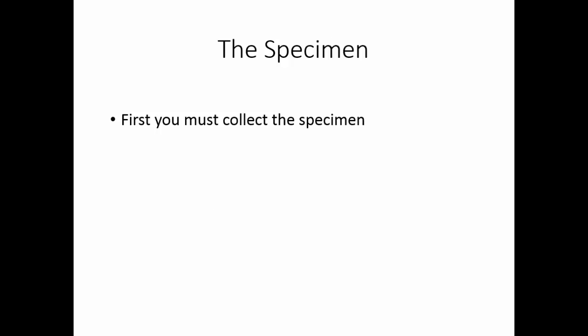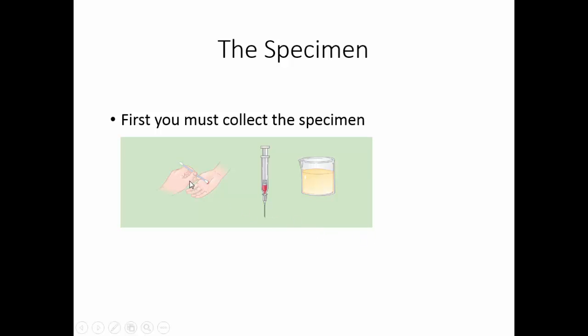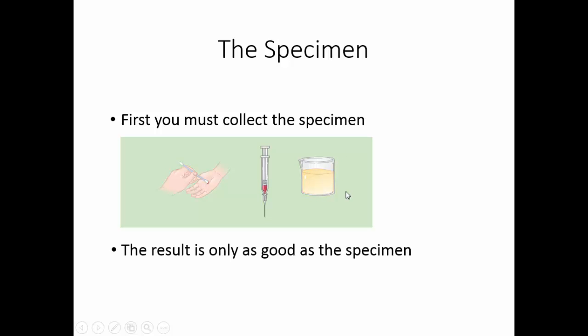It all starts with a specimen. First, you must collect the specimen, and there are a variety of ways to collect a clinical specimen: swabs, the aspiration of fluid, or the collection of naturally eliminated body fluids. But you have to remember, the result of the culture is only as good as the specimen.